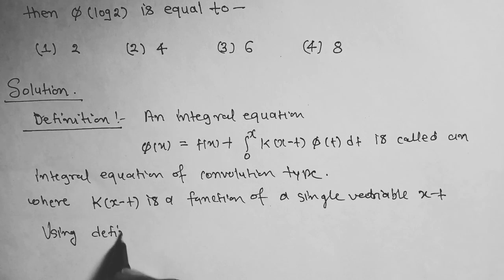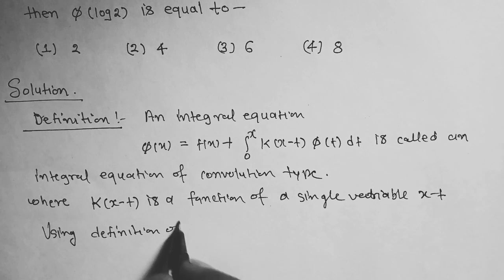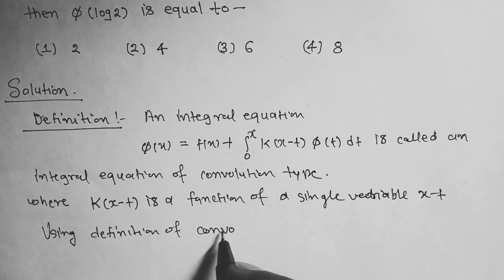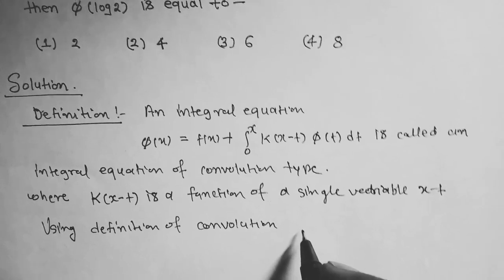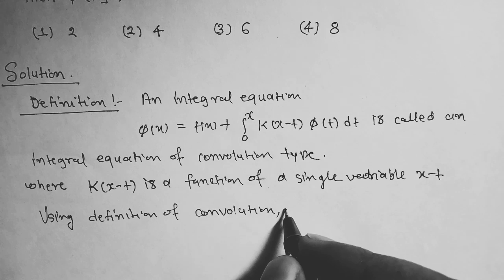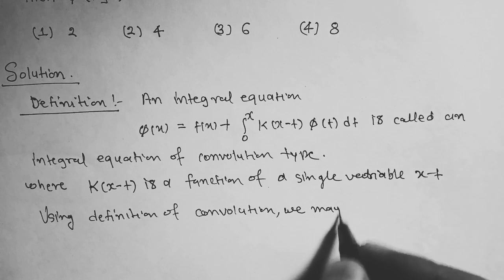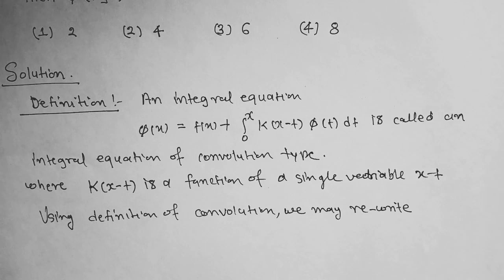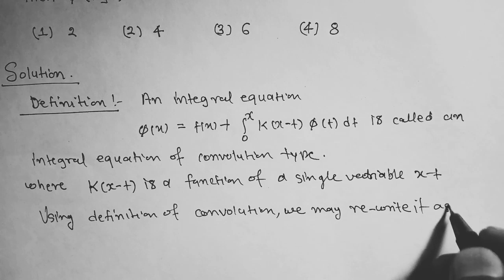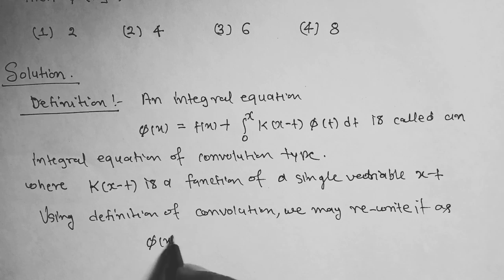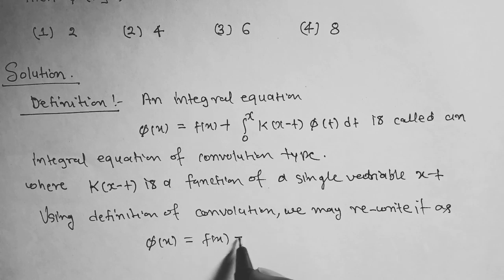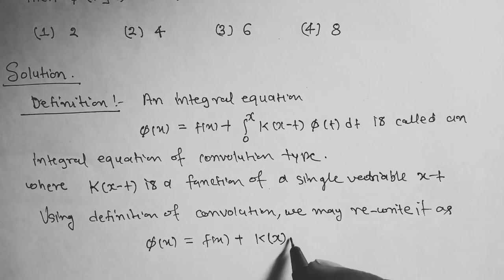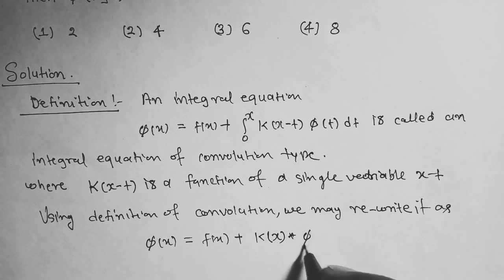Using definition of convolution, we may rewrite it as φ(x) equal to f(x) plus K(x) star φ(x), where star denotes convolution.